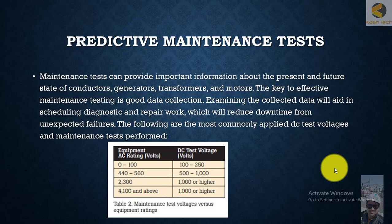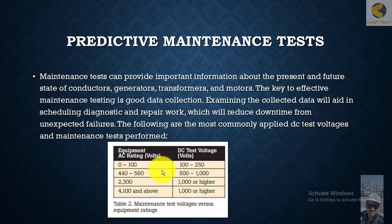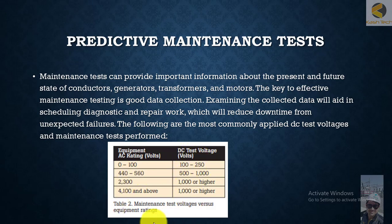The following are the most common applied DC voltages and maintenance test performance performed. This is the equipment AC rating — 0 to 100 volts — for maintenance testing, and this is the DC voltage which you can apply on it. This is basically the maintenance test voltage versus equipment rating.